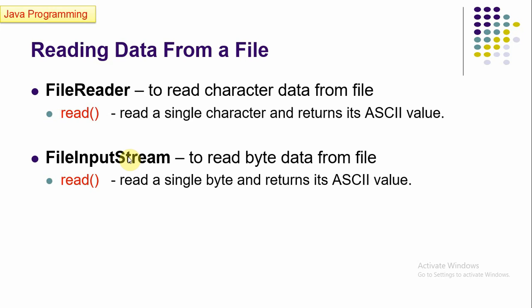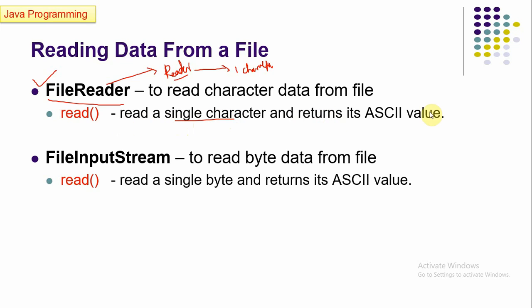First, you have to decide whether you want to deal with character data or byte data, and based on that we select the technique. If you want to read character by character, we use FileReader. FileReader is a stream based on the Reader class, which is a character-oriented stream. In Java, a character is represented by two bytes, so it reads two bytes at a time. It has a read() method that reads a single character and returns its ASCII value as an integer, not as a character format.